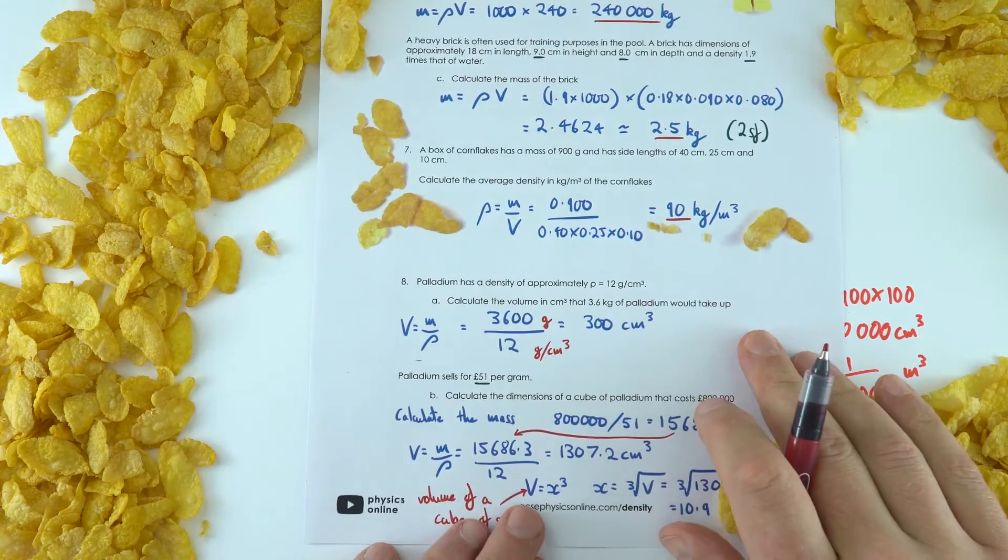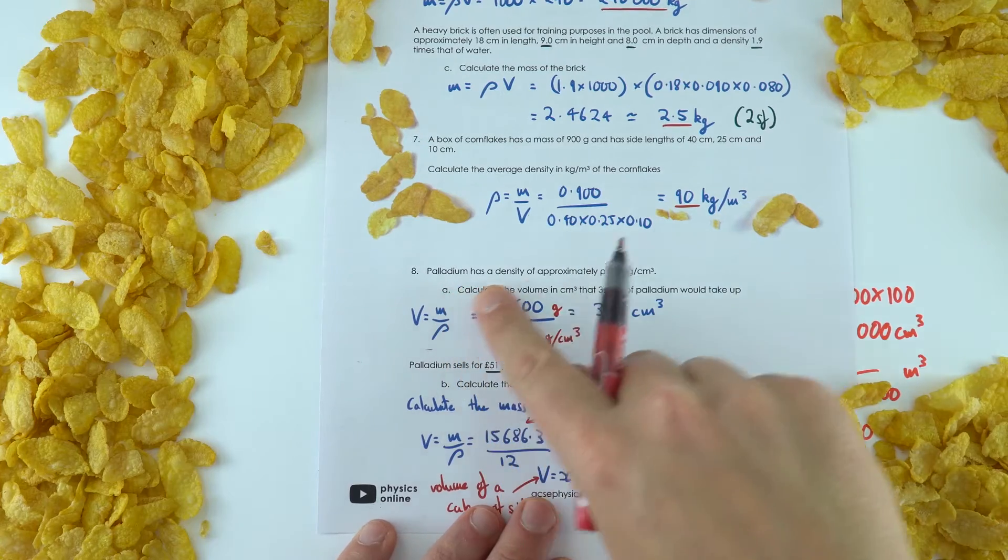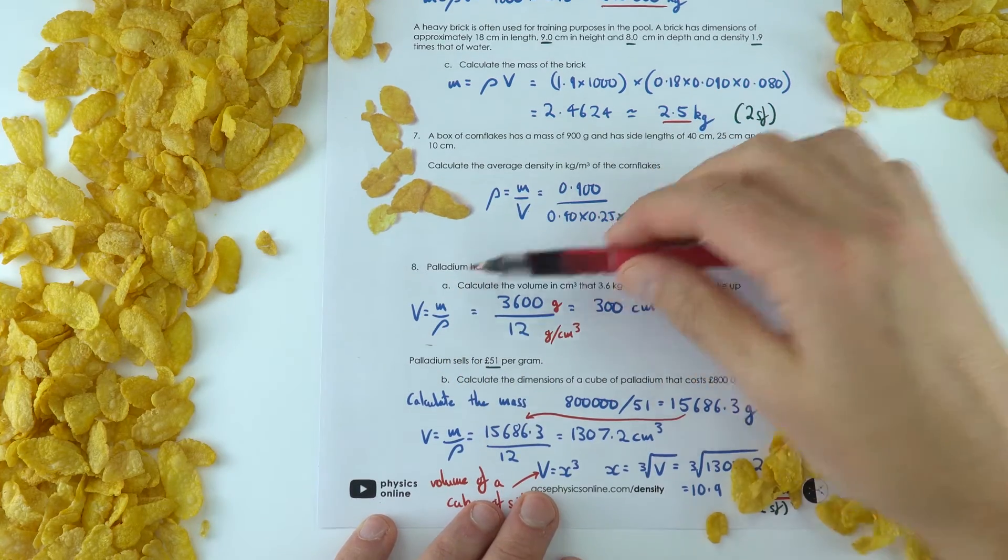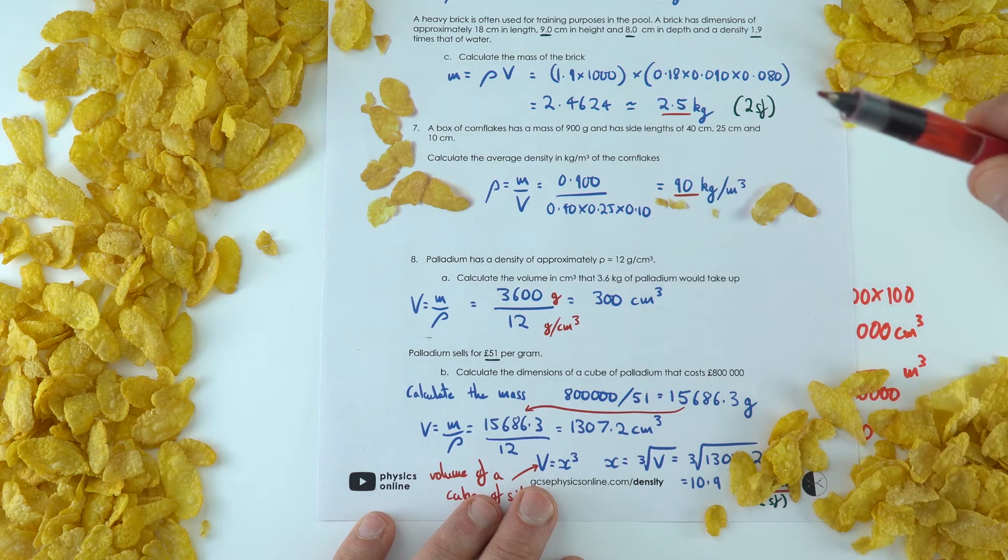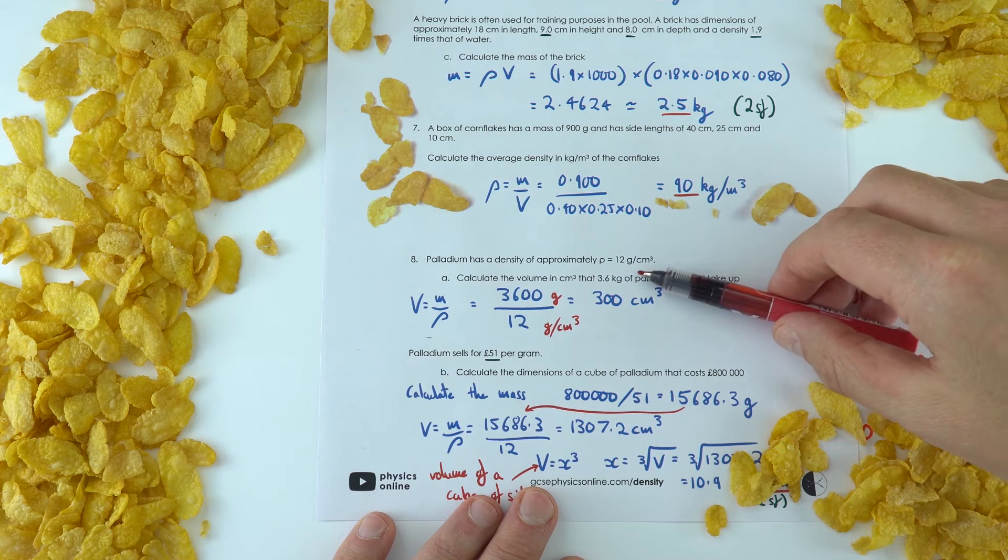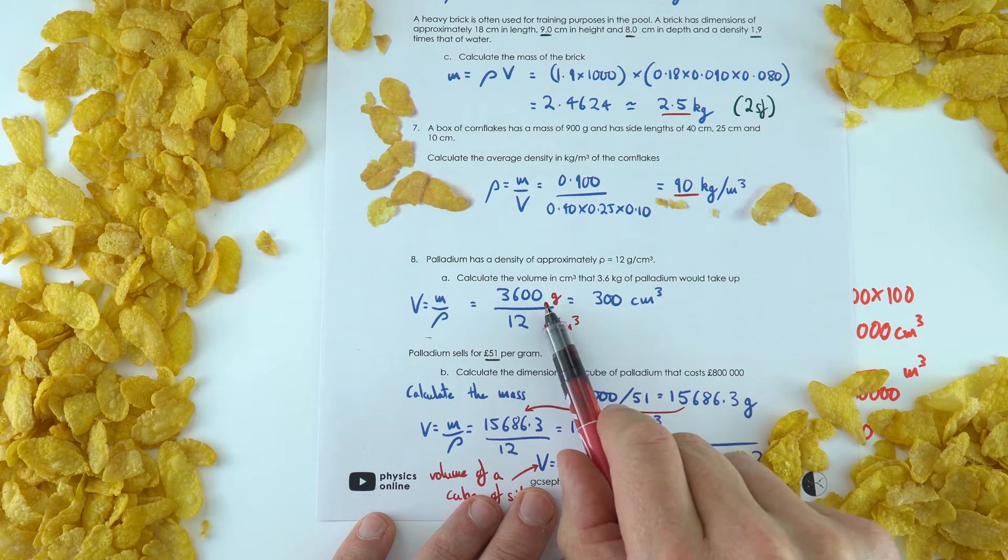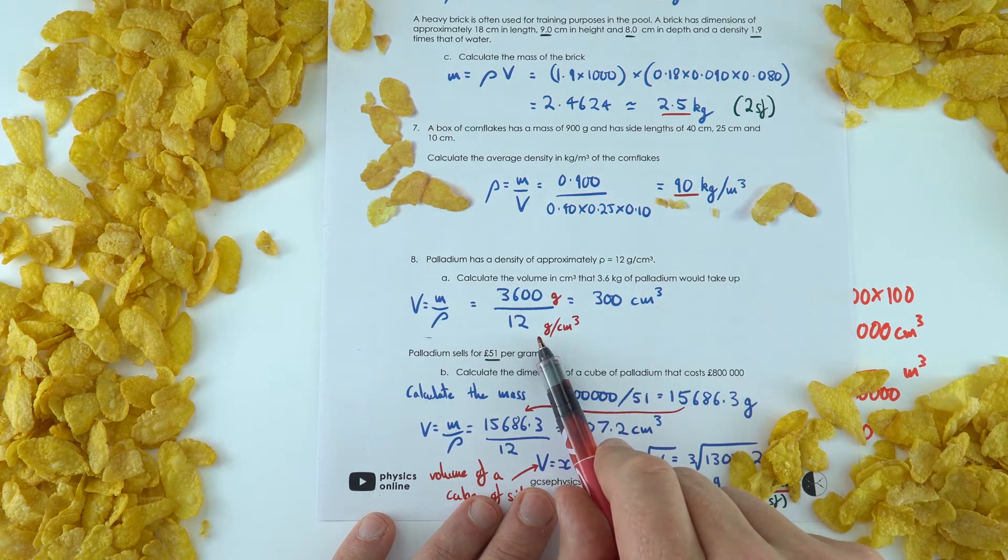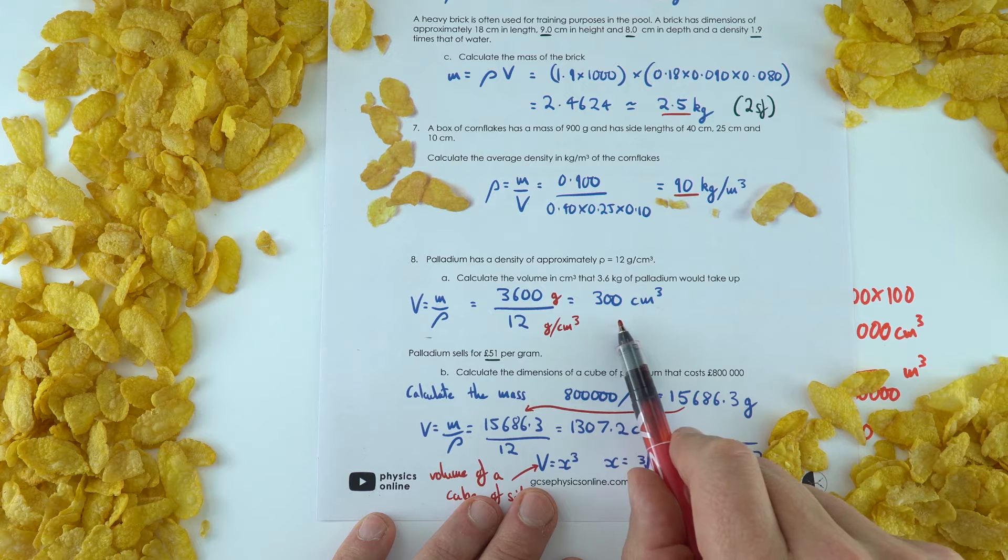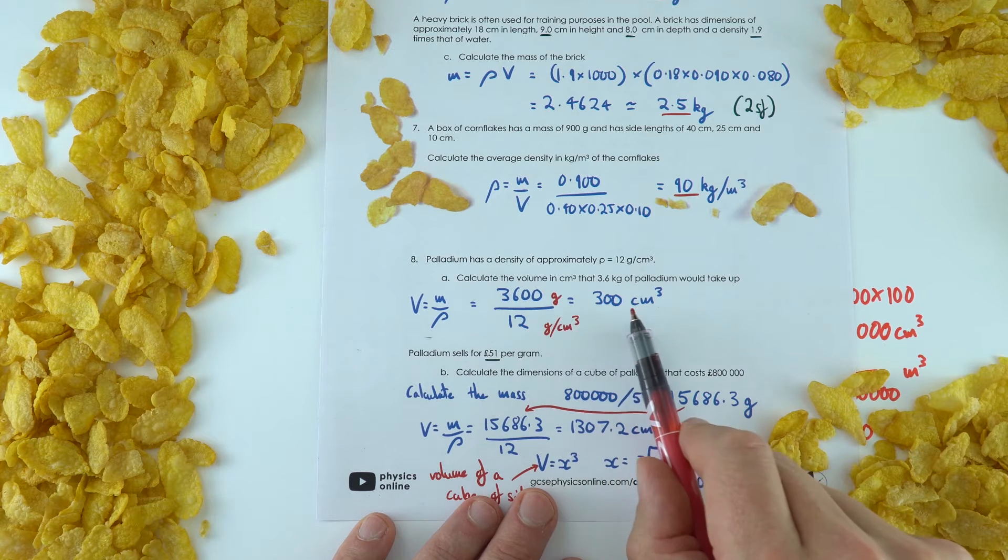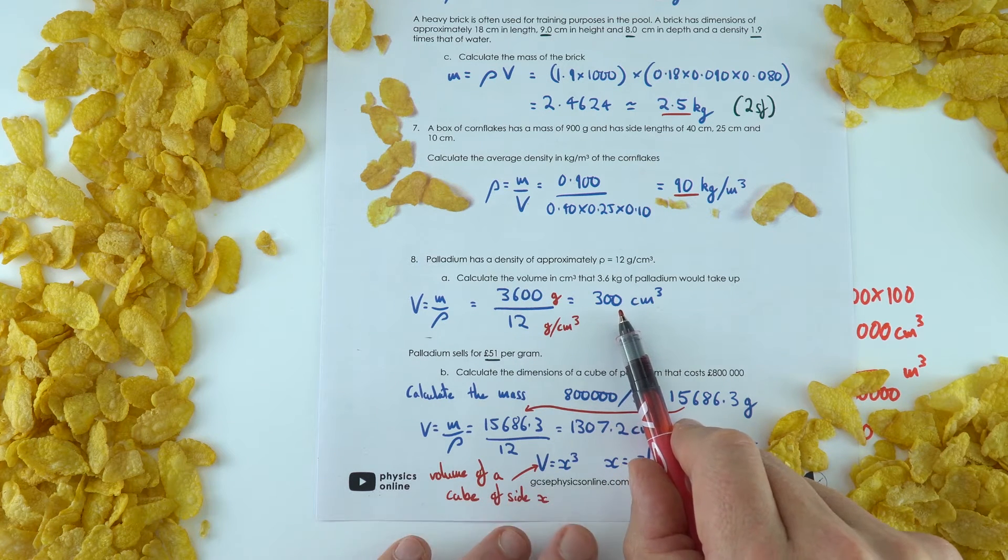And finally, this one over here, palladium. Now you don't need to know anything about palladium apart from the data given to you in the question. Now for this one over here, we've actually been given the values in grams per cubic centimeters, and I left this one in grams, and this in grams per cubic centimeter, to get my total volume in cubic centimeters that 3.6 kilograms would take up.